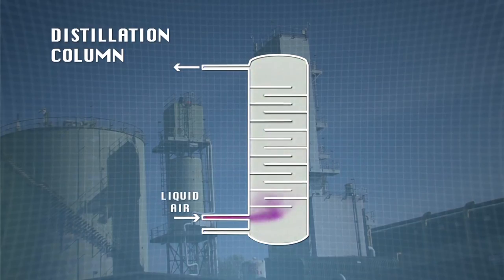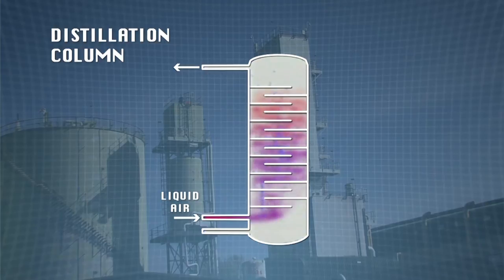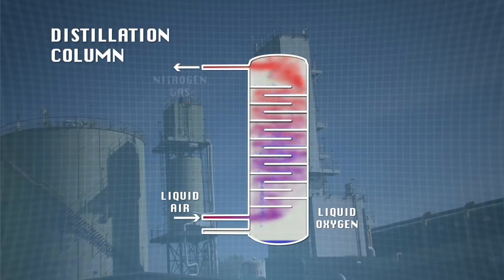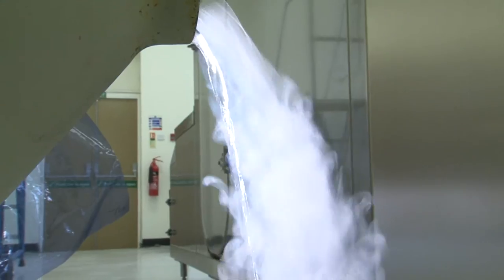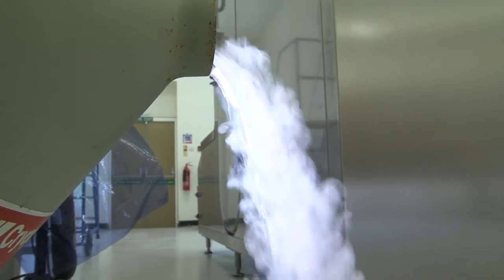The gases used to package food, amongst other things, are distilled from the air using fractional distillation. At minus 183 degrees centigrade, oxygen separates out as a liquid and very cold nitrogen gas remains. When cooled still further, to minus 196 degrees centigrade, nitrogen becomes a cryogenic liquid.